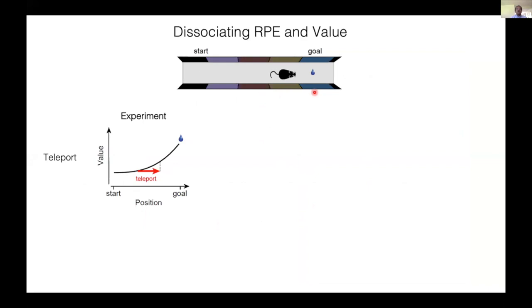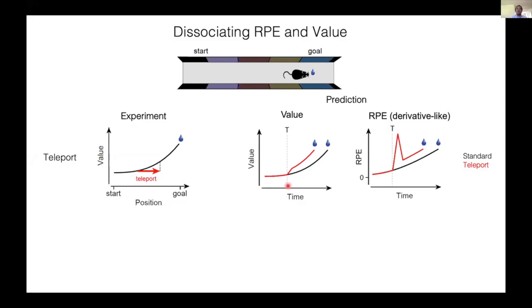Imagine that a mouse moves in a linear track to obtain a reward. What if the mouse is suddenly teleported to a new location? Let's assume that there is a monotonically increasing value function. After teleport, the mouse moves from here to here and the value will increase suddenly. This results in a step-like increase in value as shown here. In contrast, teleport will cause a transient response in TD error because it is the derivative.